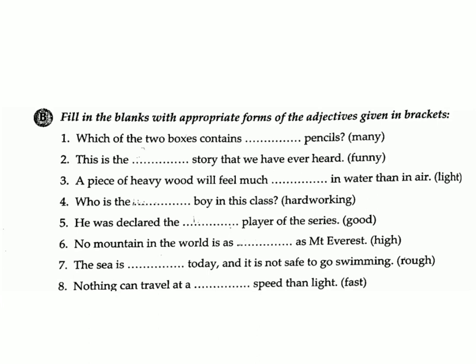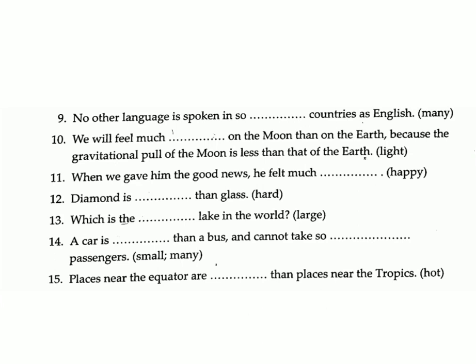7. The sea is rough today and it is not safe to go swimming. (rough) Answer: rough. 8. Nothing can travel at a faster speed than light. (fast) Answer: faster. 9. No other language is spoken in so many countries as English. (many) Answer: many. 10. We will feel much lighter on the moon than on the earth because the gravitational pull of the moon is less than that of the earth. (light) Answer: lighter. 11. When we gave him the good news, he felt much happier. (happy) Answer: happier. 12. Diamond is harder than glass. (hard) Answer: harder. 13. Which is the largest lake in the world? (large) Answer: largest. 14. A car is smaller than a bus and cannot take so many passengers. (small, many) Answer: smaller, many. 15. Places near the equator are hotter than places near the tropics. (hot) Answer: hotter.